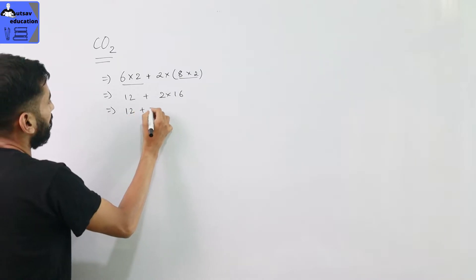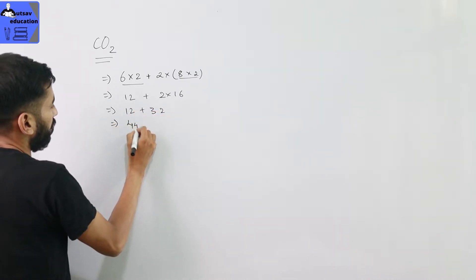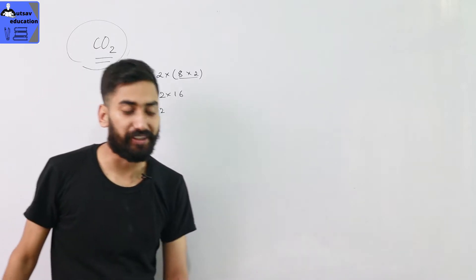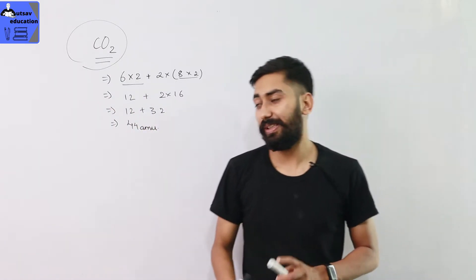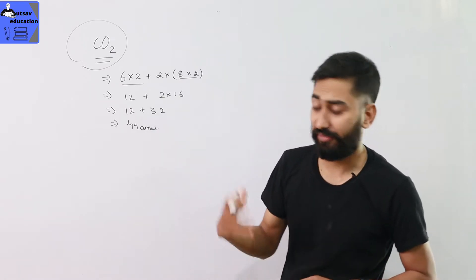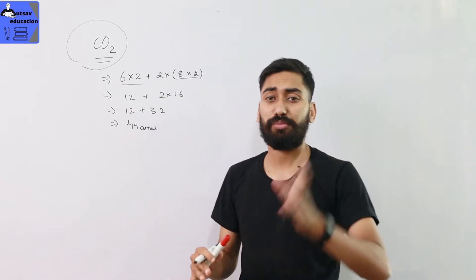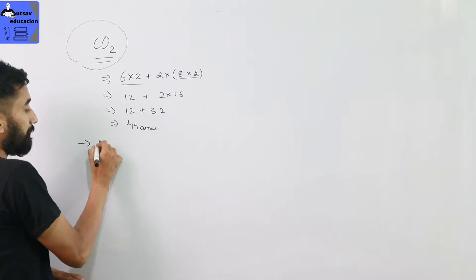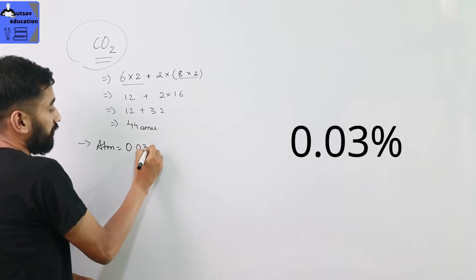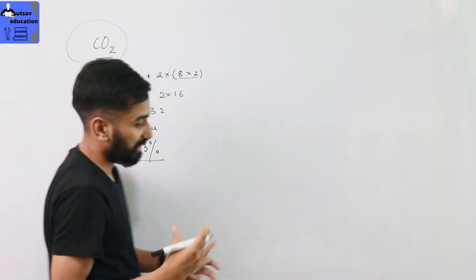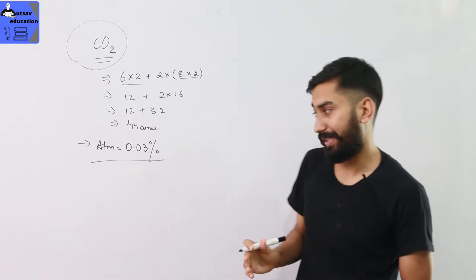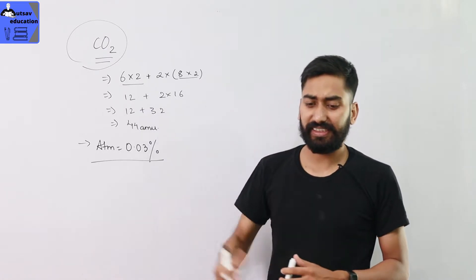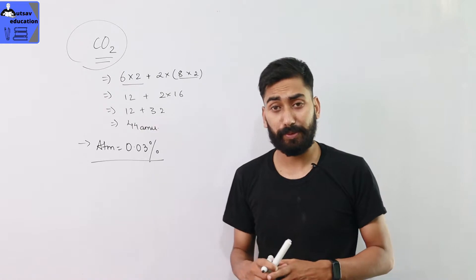Carbon dioxide has a molecular mass of 44. Carbon dioxide is natural and occurs in the atmosphere at a concentration of 0.03%. These are the natural physical properties of carbon dioxide.